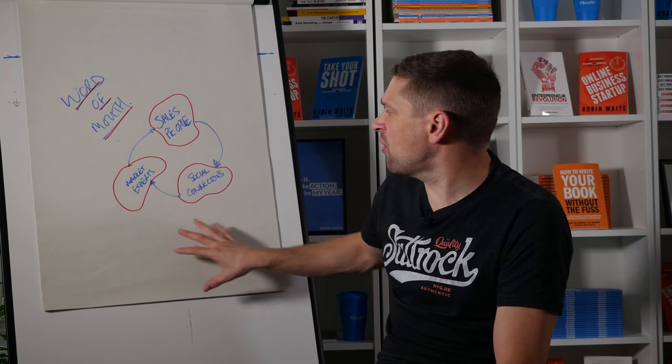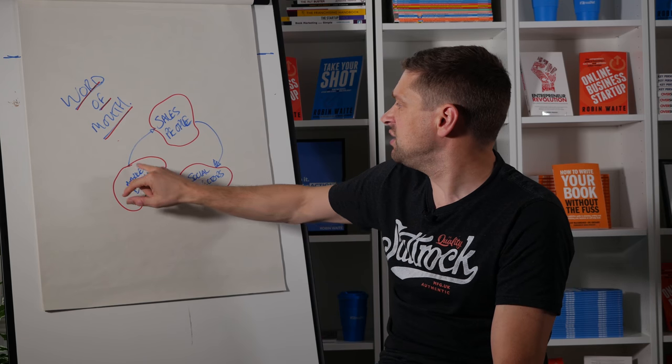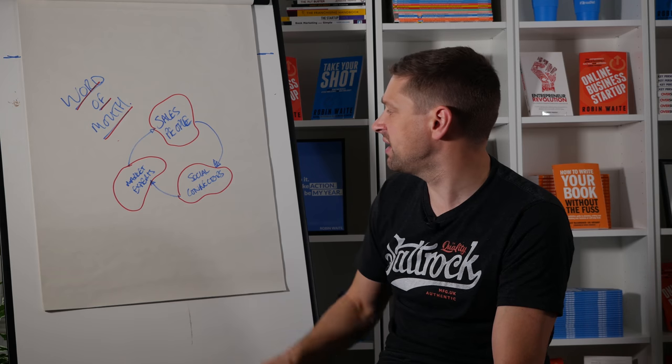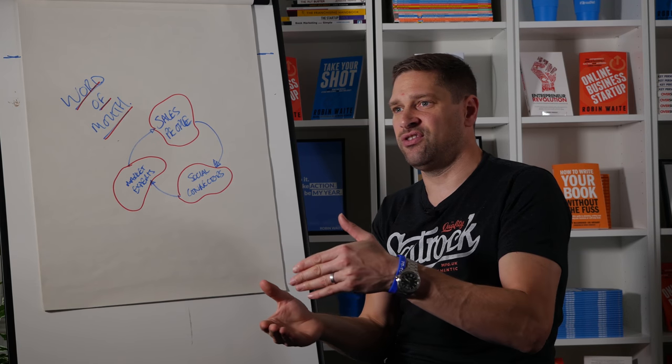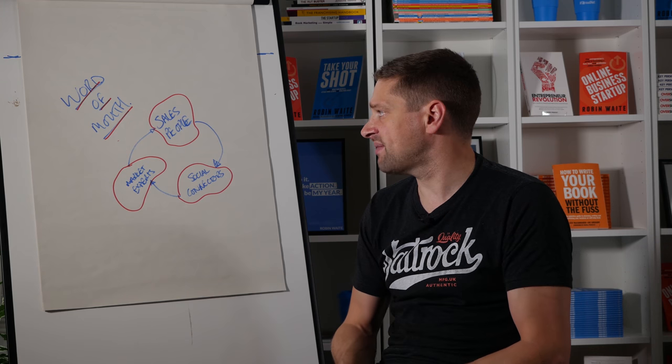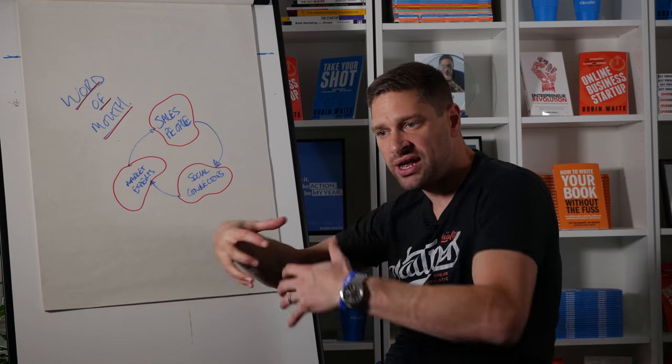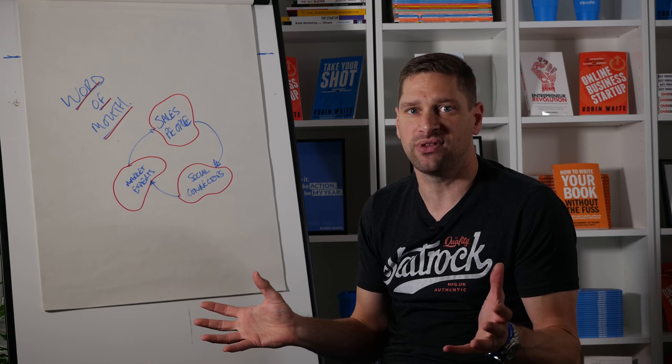So typically, you can take on different roles and responsibilities within this. If you're a solopreneur working on your own, you may end up having to be a salesperson, a social connector, and a market expert - all three of them. But in terms of how this fits in with how to lose a client in seven days, this is really about knowing which people to pull in around you because we can get really busy having coffee with absolutely everybody who comes along.